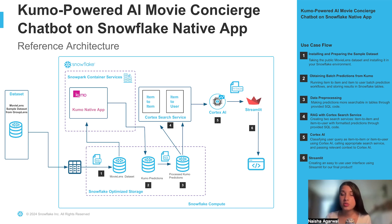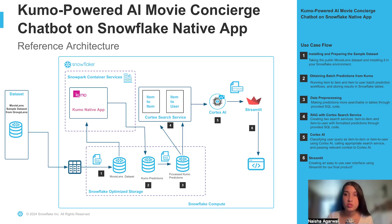Once these are stored, we do some pre-processing to make these predictions more searchable through some SQL code. Once we do that processing, we utilize Snowflake's Cortex Search Service to initiate our RAG approach. We create two search services, one for item-to-item and one for item-to-user. From there, we use Cortex AI to classify the given user query as item-to-item or item-to-user, and then pass in the relevant context from the appropriate search service to generate the final response. Finally, we use Streamlit to generate an easy-to-use user interface for our final product.